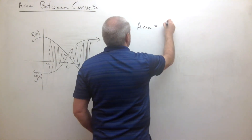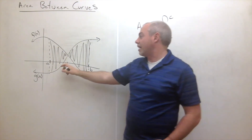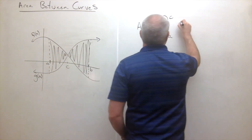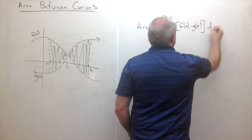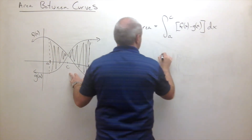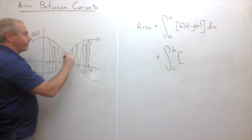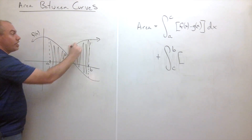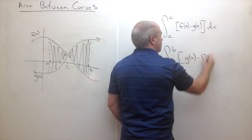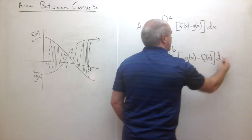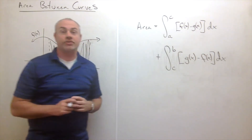To find the total area between the two curves when they cross, the area equals the integral from a to c of f of x minus g of x dx — since f of x is on top between a and c — plus the integral from c to b of g of x minus f of x dx — since g of x is now the top function between c and b. Adding these two integrals gives the total area trapped between the two curves.